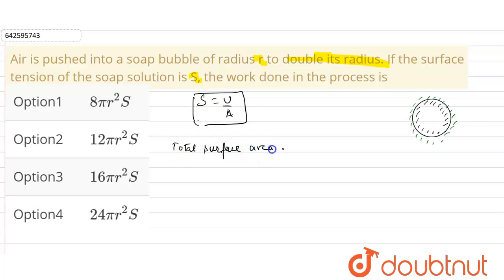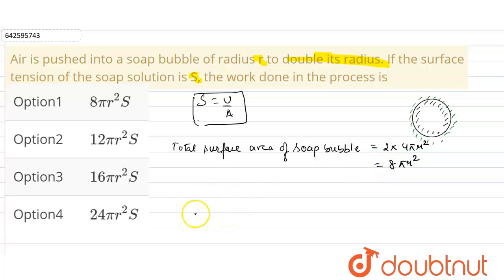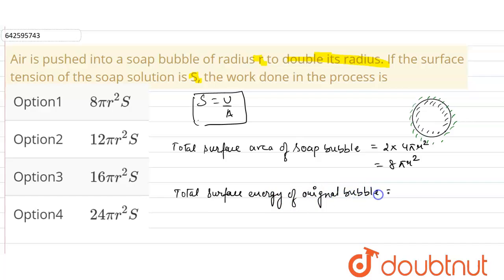The total surface area of the soap bubble will be 2 × 4πr², which equals 8πr². The total surface energy of the original bubble will be total surface area times surface tension, so it will be 8πr² × s.